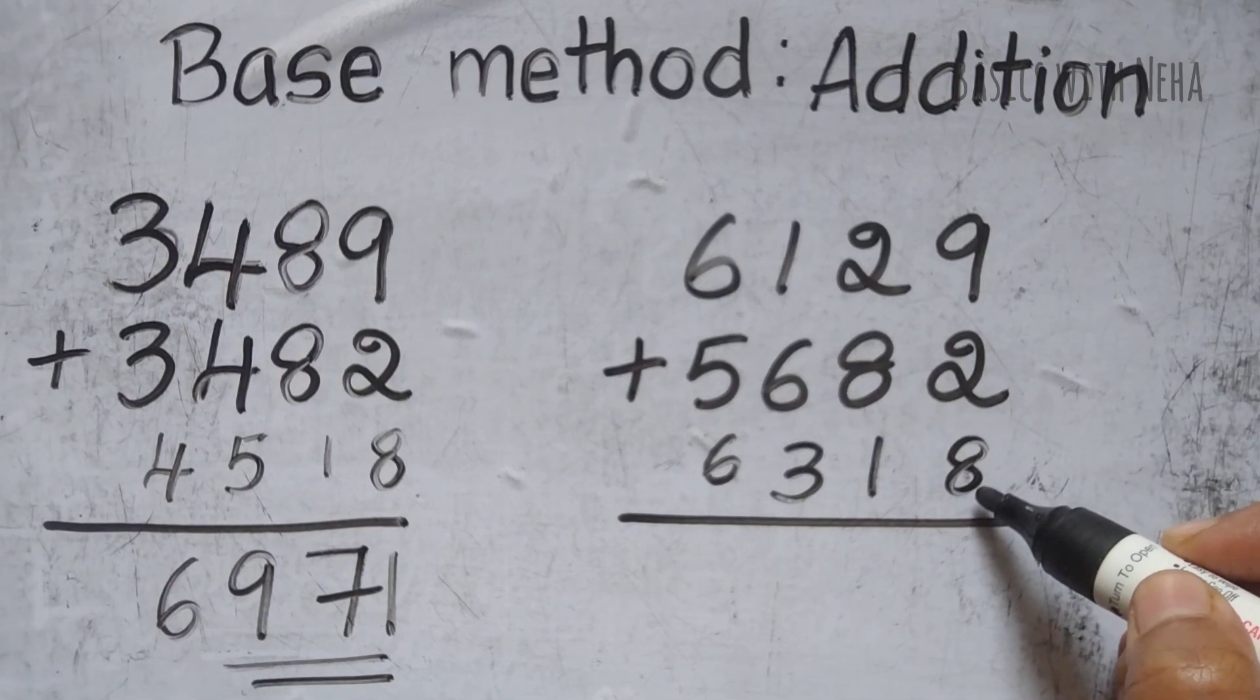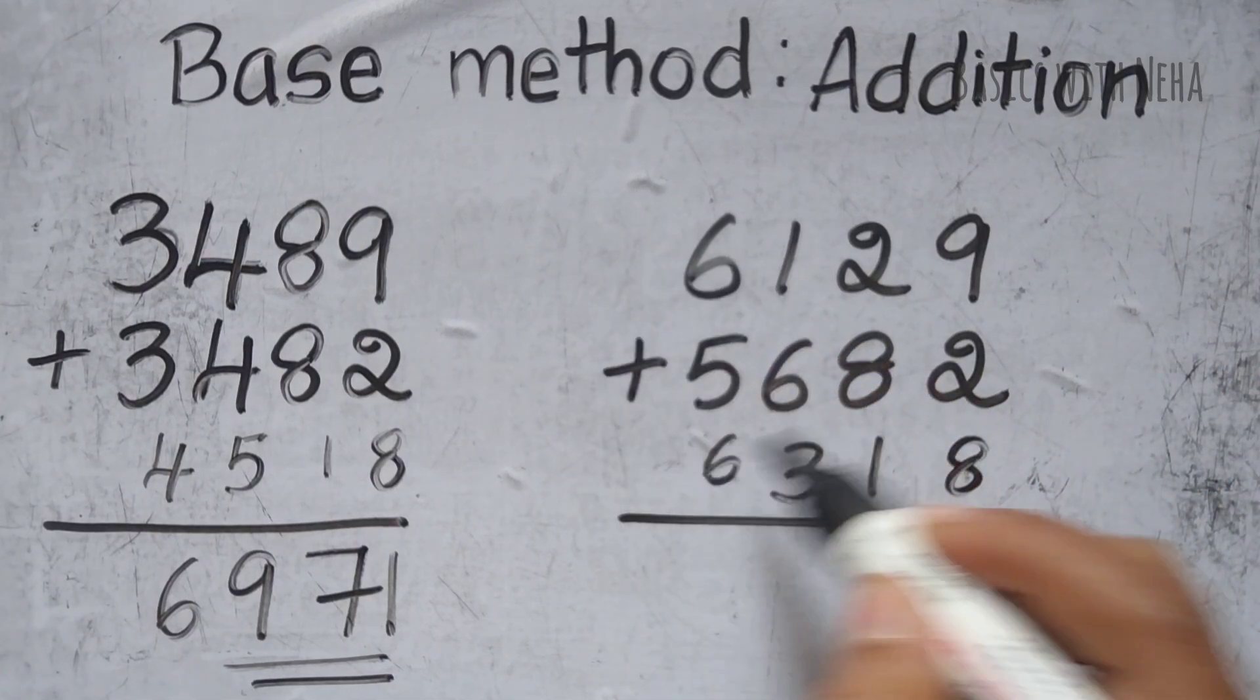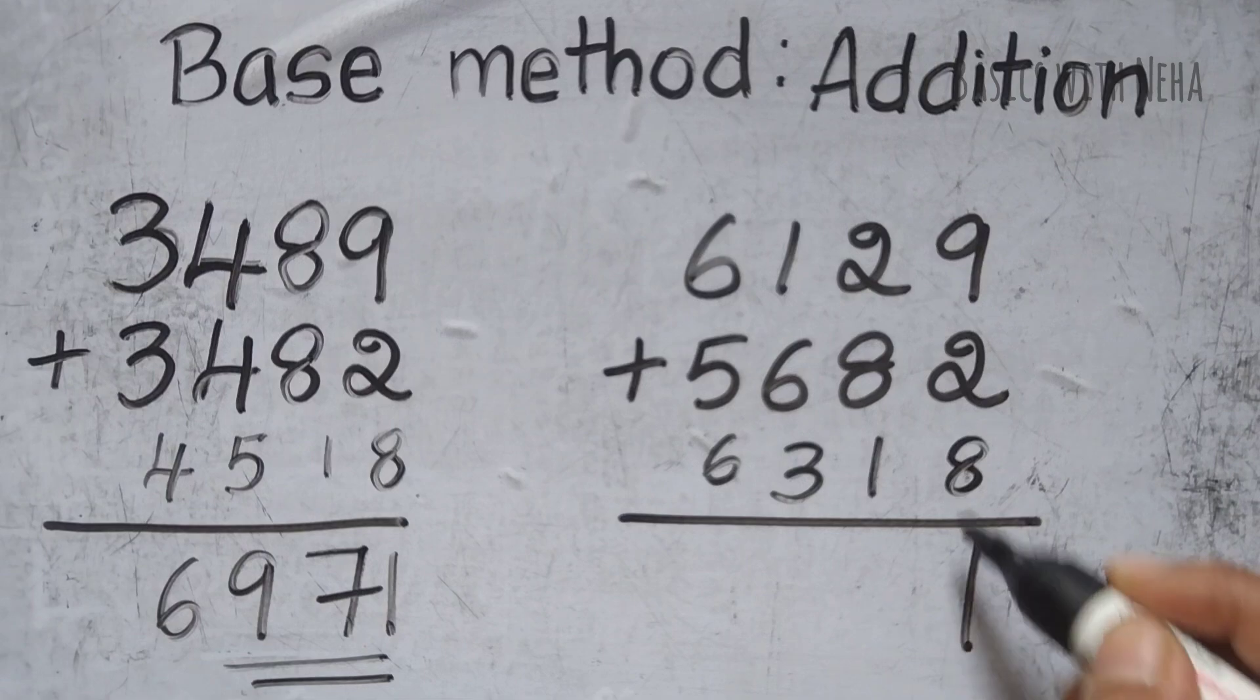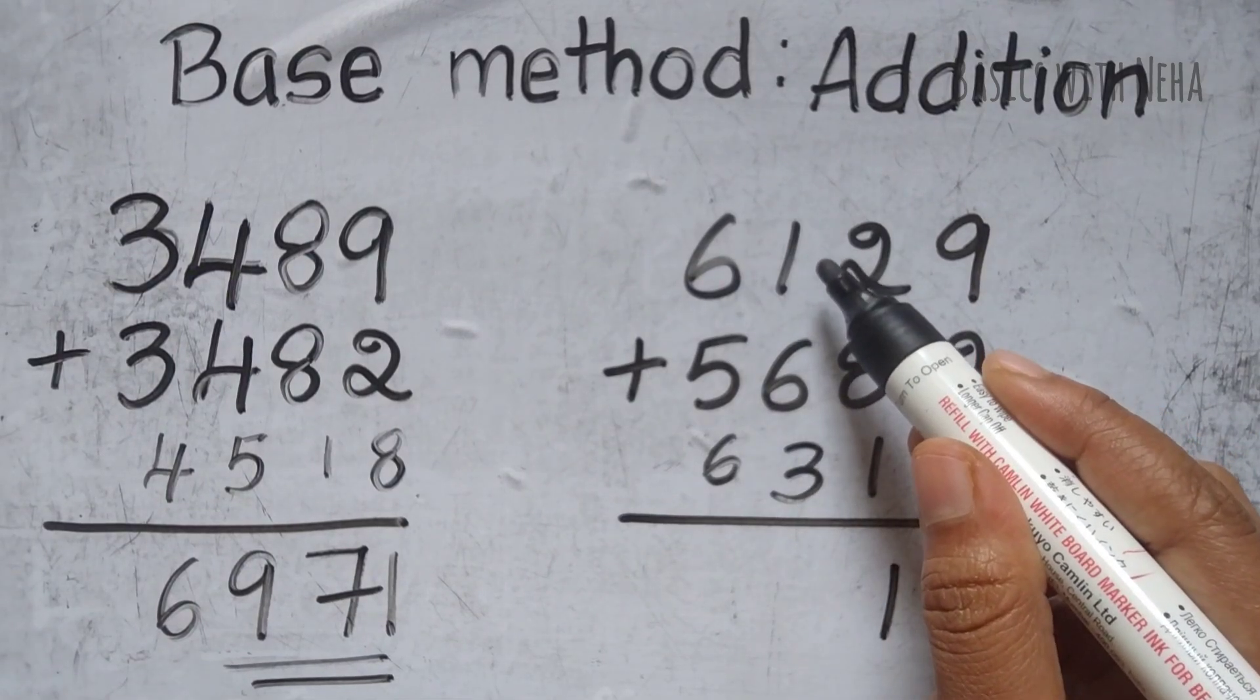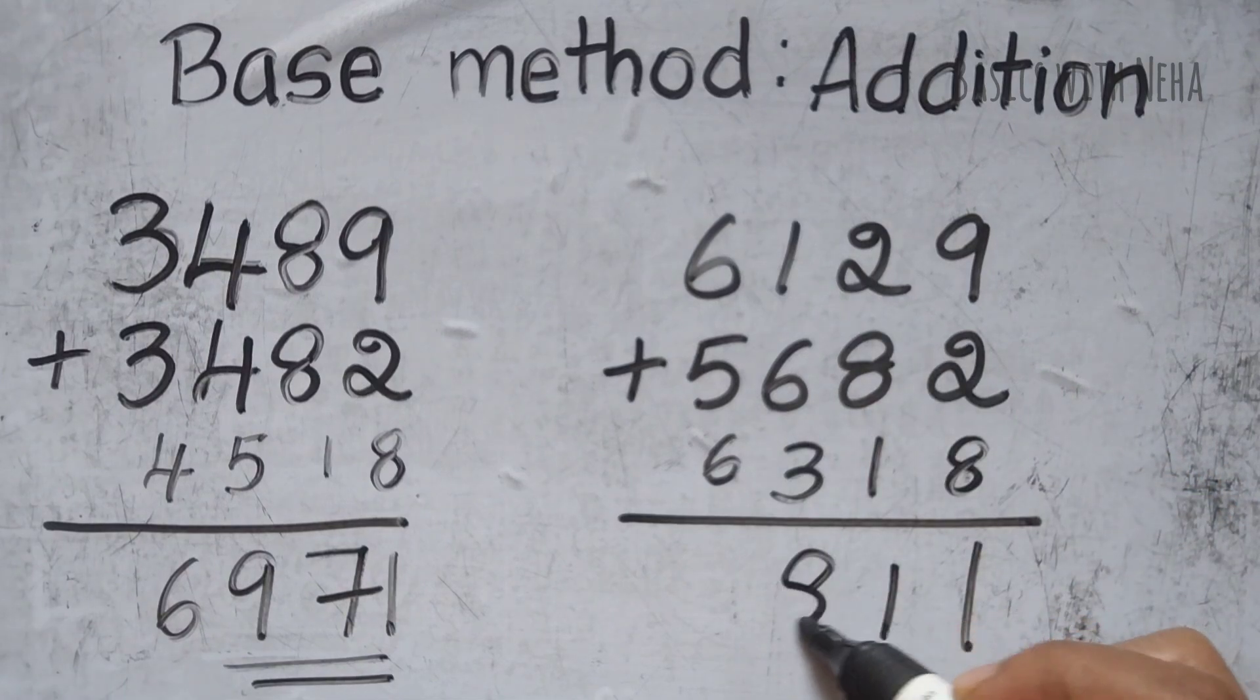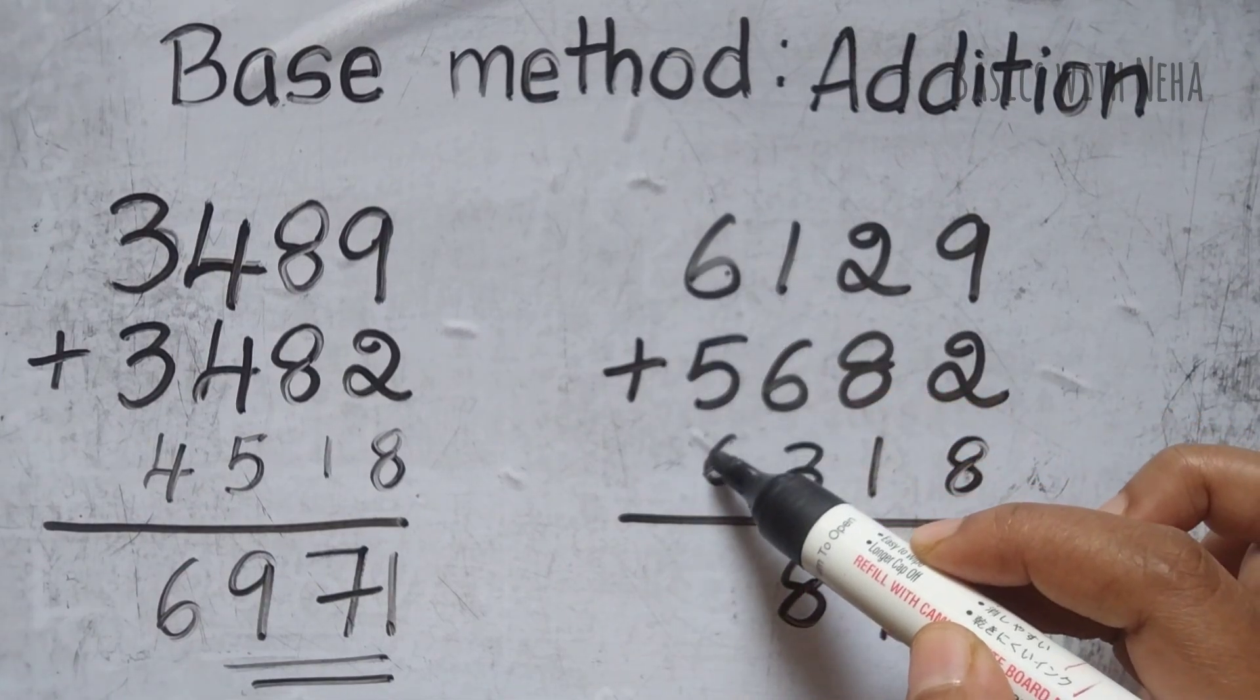Now subtract the complement and add the base. 9 minus 8 is 1. 2 minus 1 is 1. 1 minus 3 I cannot do. So 3 minus 1 is 2. 2 on 10 is 8. 6 plus 6 is 12.